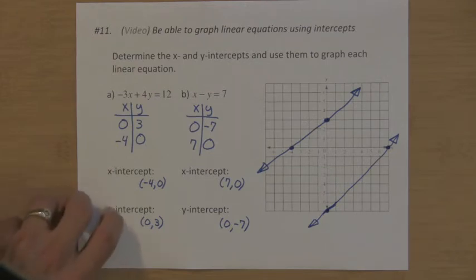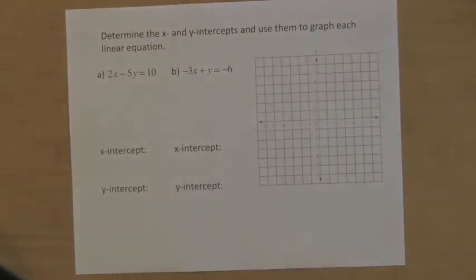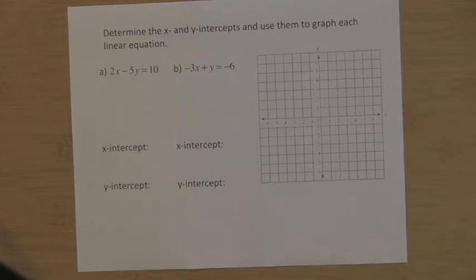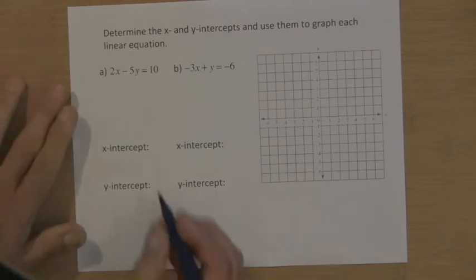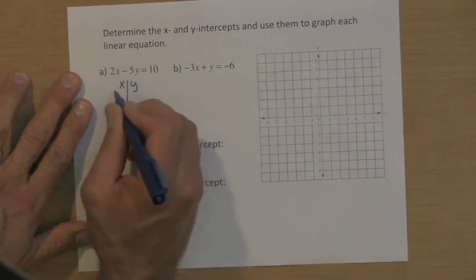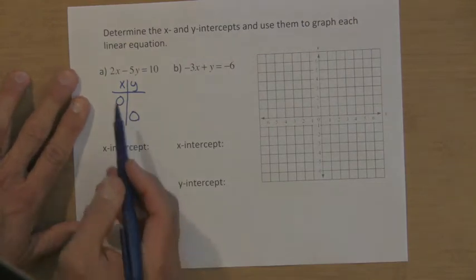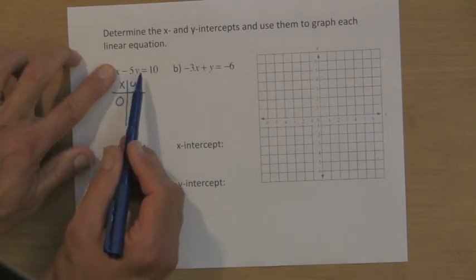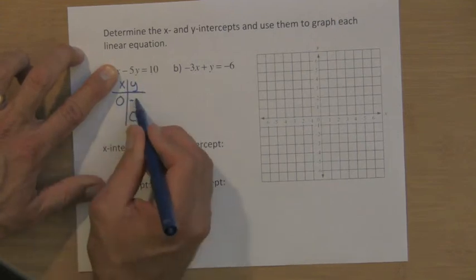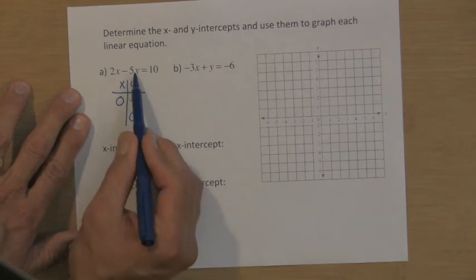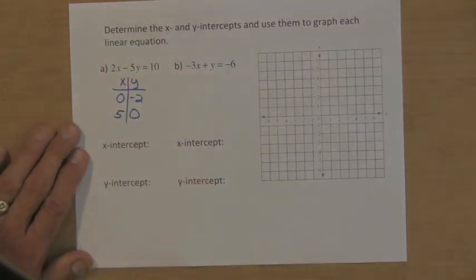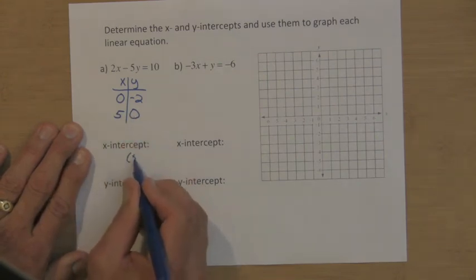Here are two problems for you to try — two equations. Graph both of them using x and y-intercepts. Pause the video, work them out, and then check your accuracy. For the first one, I want to graph it using only two points: x and y-intercepts. When x is zero, two times zero is zero, so I have zero minus five y equals ten. Something times negative five has to make ten, and that would be negative two. If y is zero, five times zero is zero, so two times x makes ten — that x value has to be five. My x-intercept is when y is zero, so that's the point five, zero. My y-intercept is when x is zero, and that's zero, negative two.